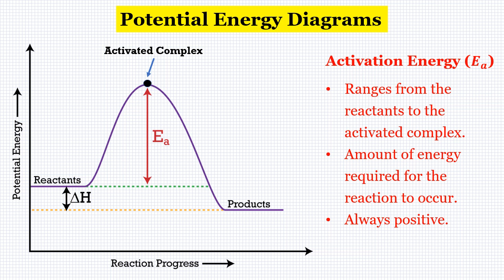The next thing we're going to look at is the activation energy. Activation energy is the amount of energy it takes for the reaction to occur. On our diagram, this is the portion of the graph from the reactants all the way up to the activated complex — and it's always going to be positive. Just like it takes energy to get from the bottom of a hill up to the top, it takes a certain amount of energy for our reaction to occur. We have to put that activation energy into the system in order for our reaction to happen.